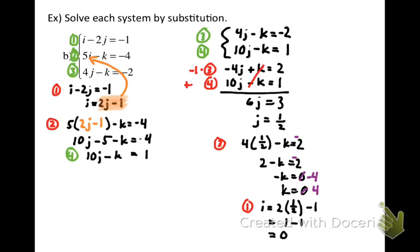Whenever you want to find the third variable, you can always go back to the first equation where you isolated it and substitute to find the third one. So we have i equals 2 times 1/2 minus 1, which is 1 minus 1, or 0. Luckily I didn't need the value of k to find i, or else I'd have had to go back and fix that first. So the ordered triple — the point where these three planes intersect one another — has coordinates 0, 1/2, and 4.